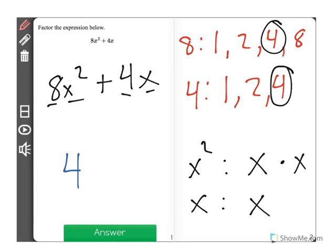So the factor there, the greatest factor is x. So x times 4 will be on the outside of the parentheses.